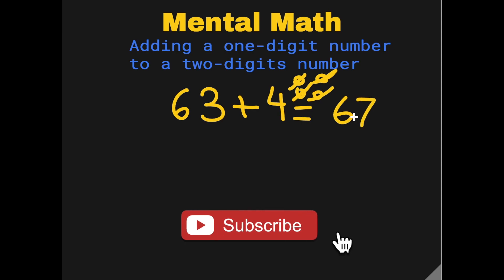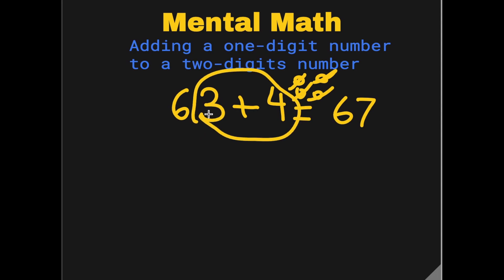This is pretty good, but we want to make this process faster. What you can do is use your addition facts, the one-digit number addition facts, and then you will be able to answer it even faster. Because 3 plus 4 is 7, you can just say that 63 plus 4 is 67.